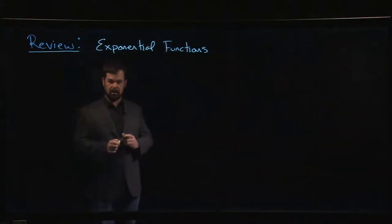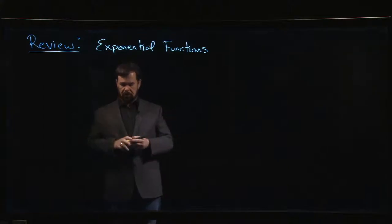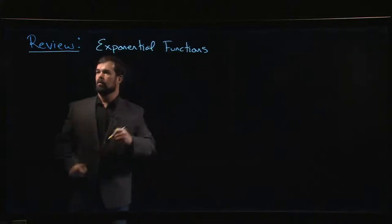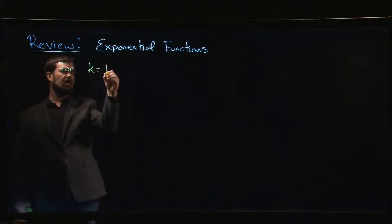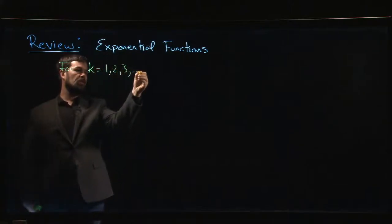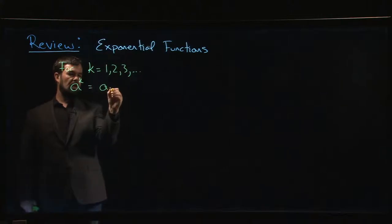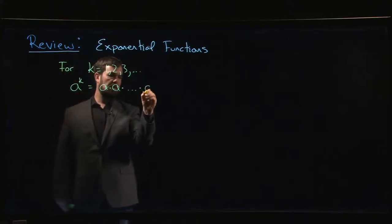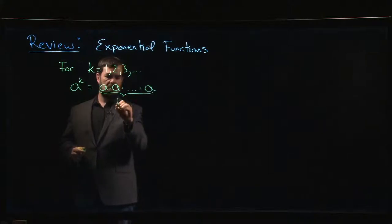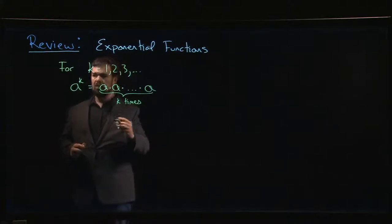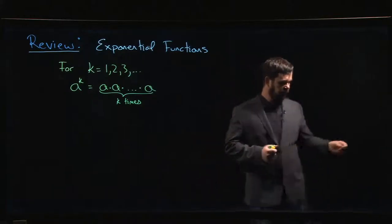In the next couple of videos we're going to take a look at exponential functions. Earlier in the algebra review we already looked at laws of exponents and went over some of the basics. If k is a natural number — so k is one, two, three, and so on — when we write a to the power k we just mean a times a times a. We think of this as repeated multiplication, and you do that k times.